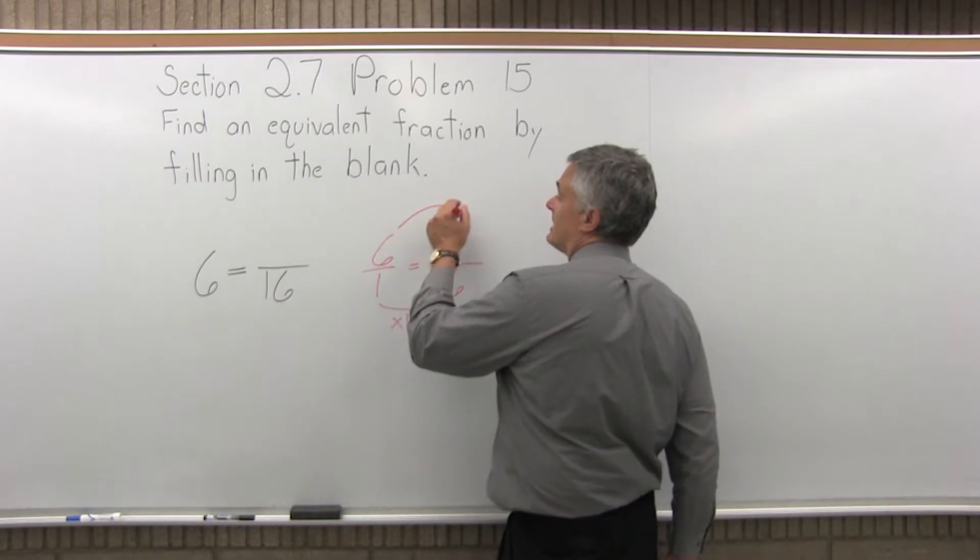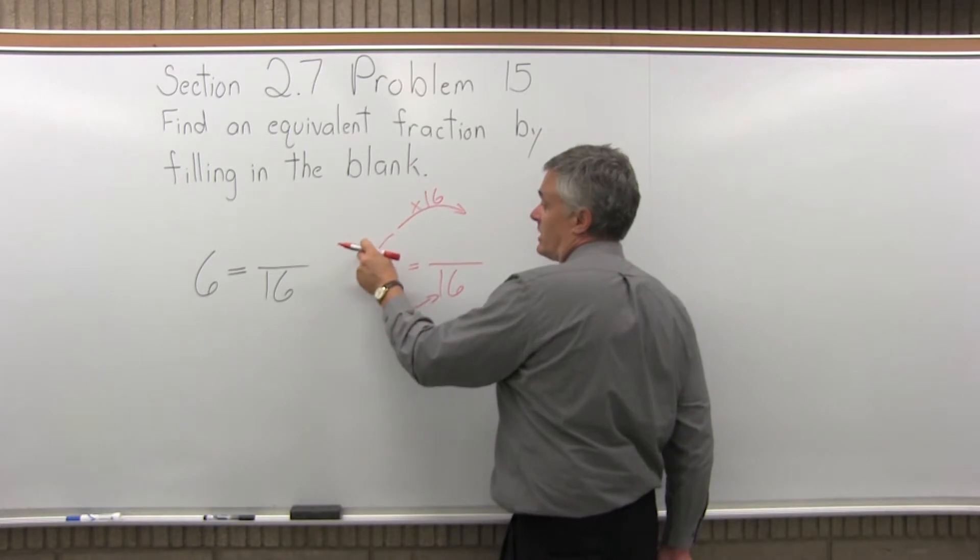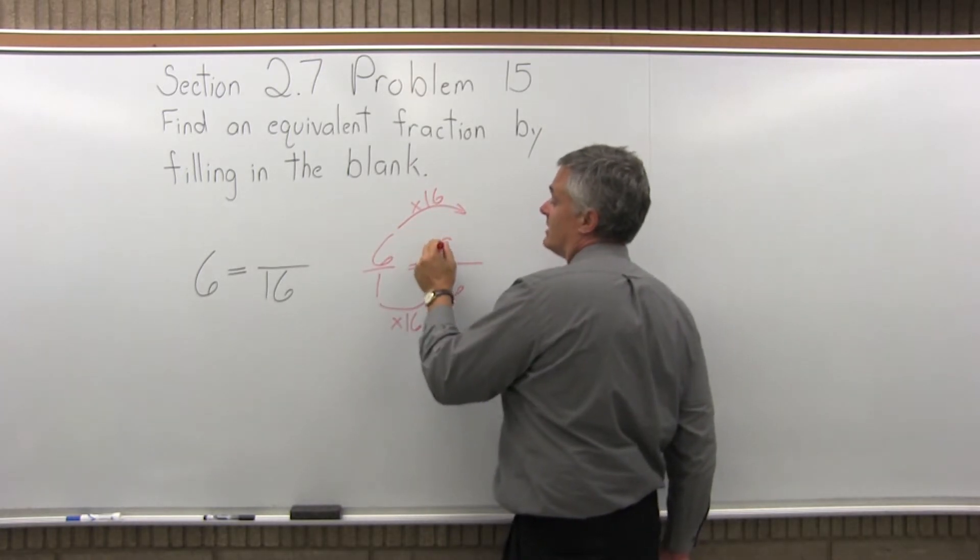So you have to multiply the same value times the numerator. So the numerator of 6 times 16 gives us our new numerator.